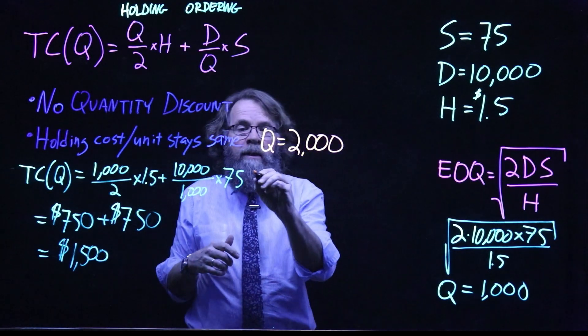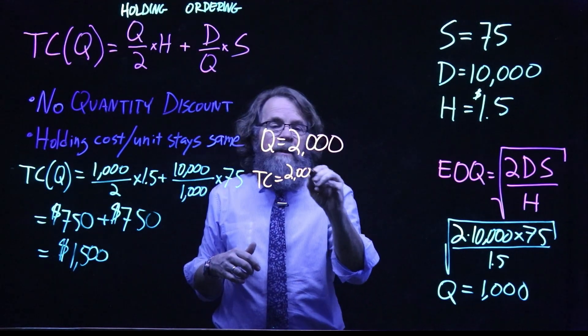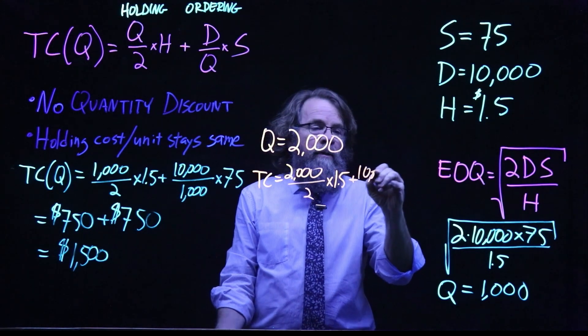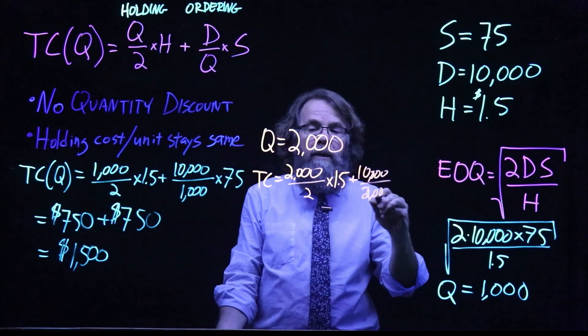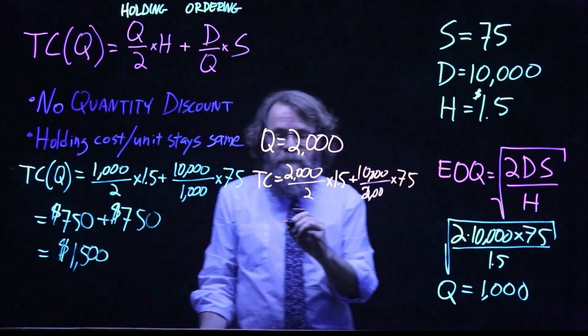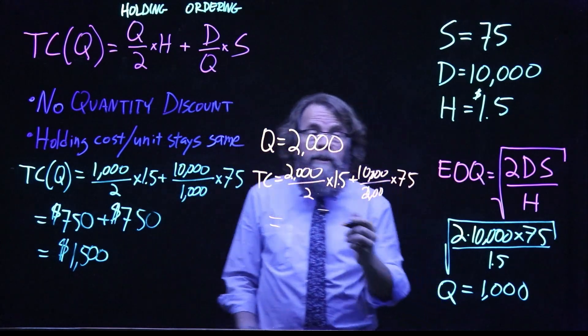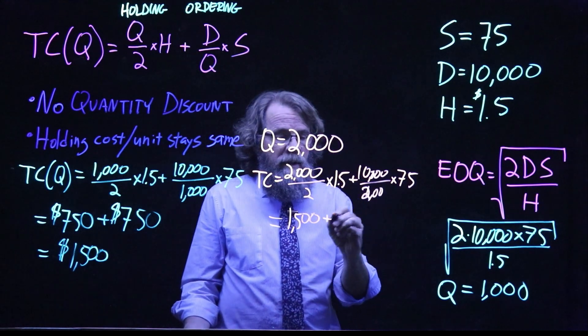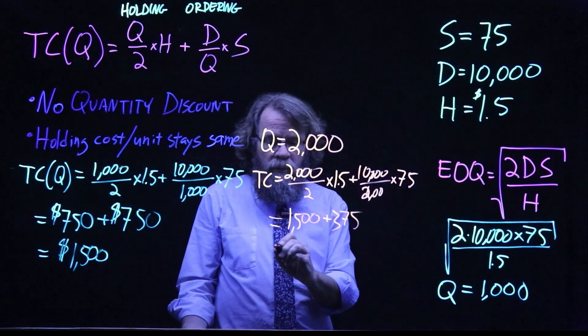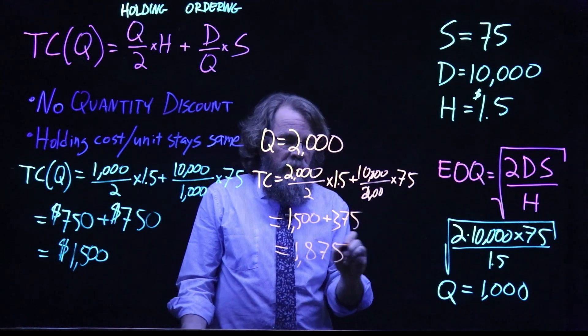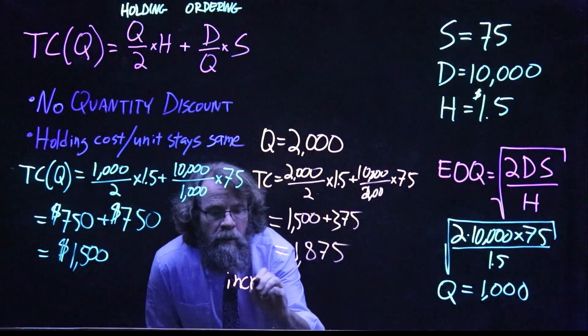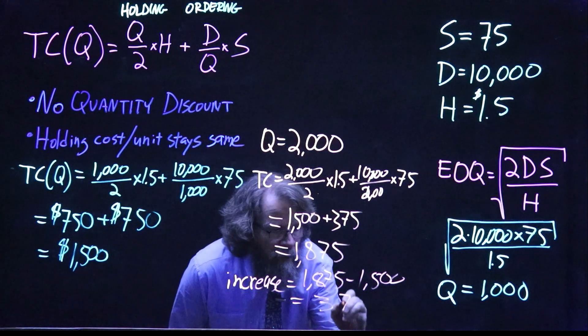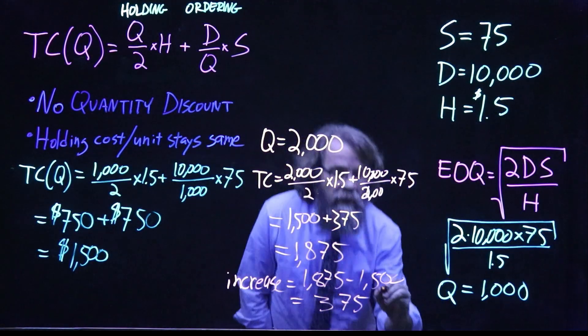So for order size of 2,000, we're going to get total cost of 2,000 divided by 2 times the holding cost of $1.50 plus 10,000 divided by 2,000 times the ordering cost of $75. So 2,000 divided by 2 is 1,000 times $1.50 is $1,500. And then 10,000 divided by 2,000 is 5 times $75 is $375. So total costs here are $1,875. So the increase is $1,875 minus $1,500, which is $375, which out of $1,500 is a 25% increase.